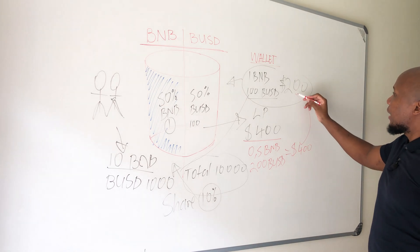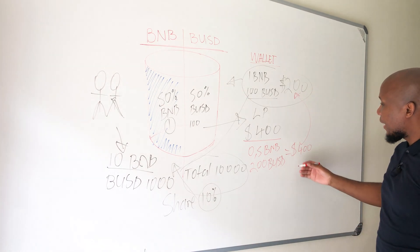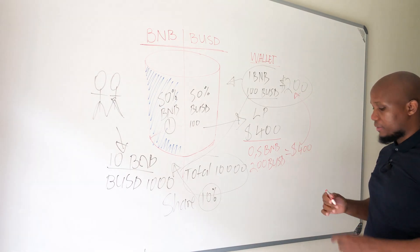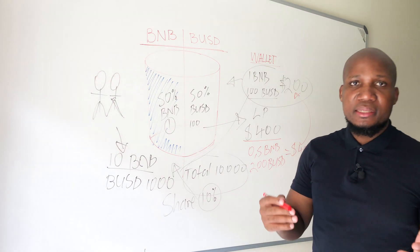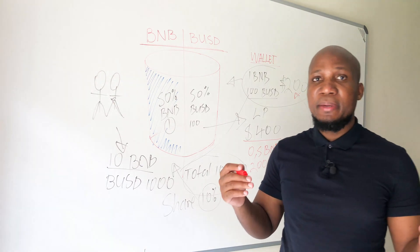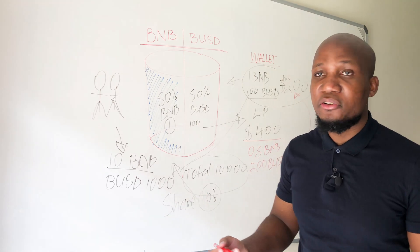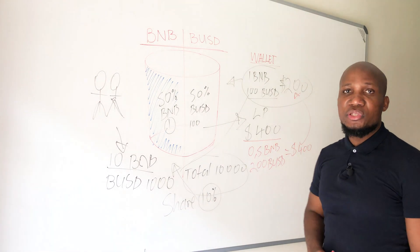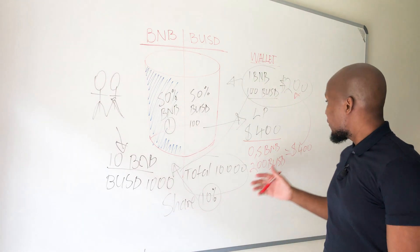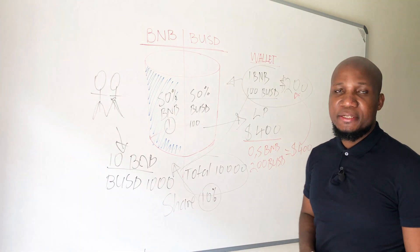So in our portfolio now, if we withdraw today, we'll have $400. At first glance, you may be happy thinking that you actually made a lot of money. And indeed, you did make money because initially you started with $200 and now you're ending up with $400.